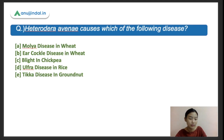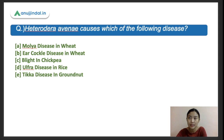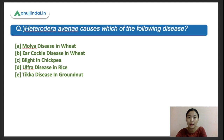Now let's move on to the questions. The first question is on Heterodera avenae - it causes which of the following diseases? Heterodera avenae is a nematode - these are mostly roundworms usually found in the soil, microscopic in nature, with great potential to affect or infect the root of the plant. They cause diseases, attacking roots and forming balls, sometimes lesions will also form.